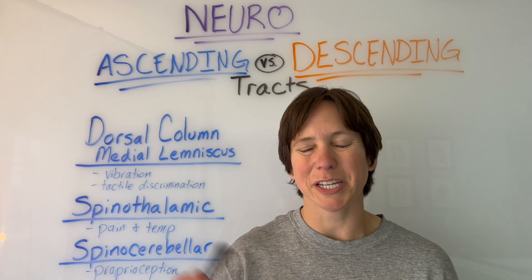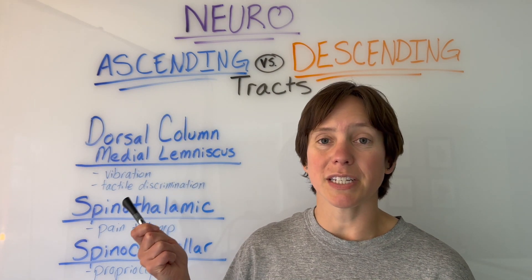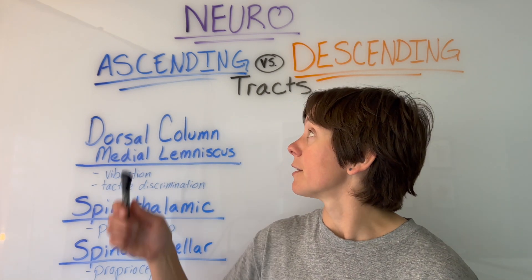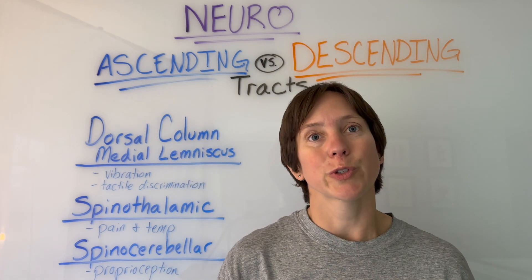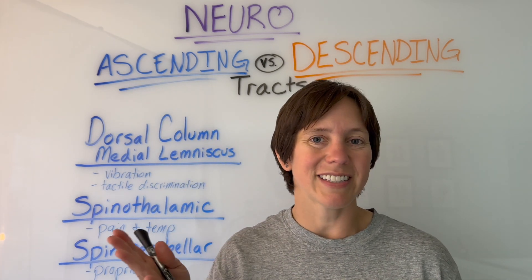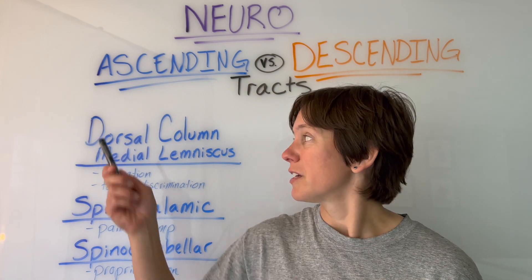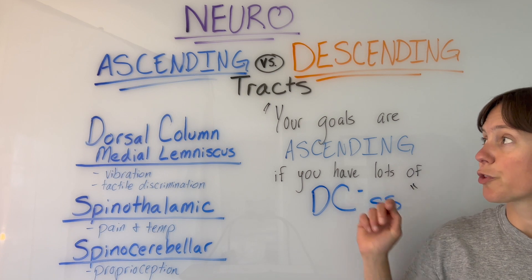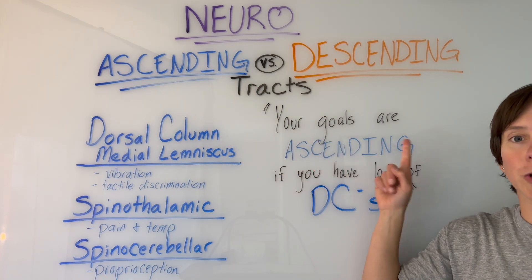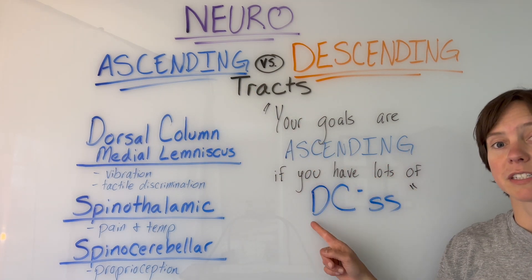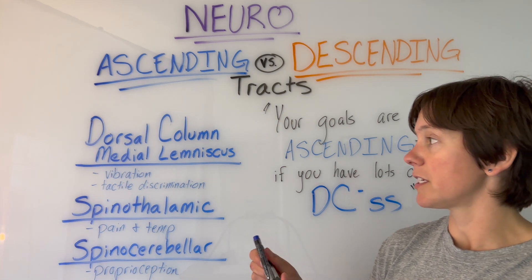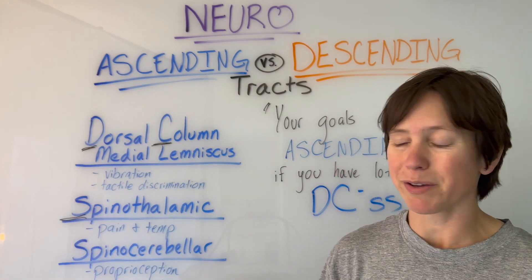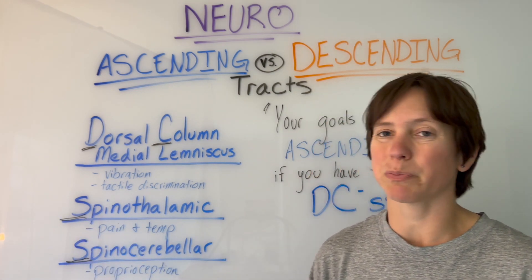A silly mnemonic to help remember your ascending tracts is DCSS. Think of discharges in PT — if you have a lot of discharges, your goals in PT are ascending. So we have D for dorsal column, S for spinothalamic, and S for spinocerebellar.